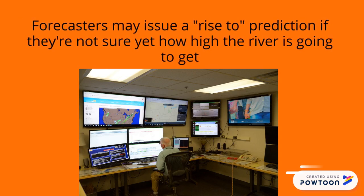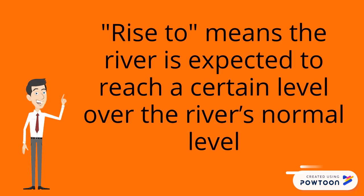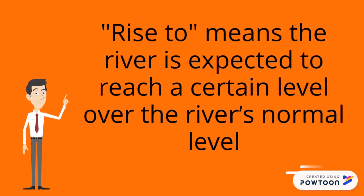Forecasters may issue a Rise 2 prediction if they're not sure yet how high the river is going to get. Rise 2 means the river is expected to reach a certain level over the river's normal level.